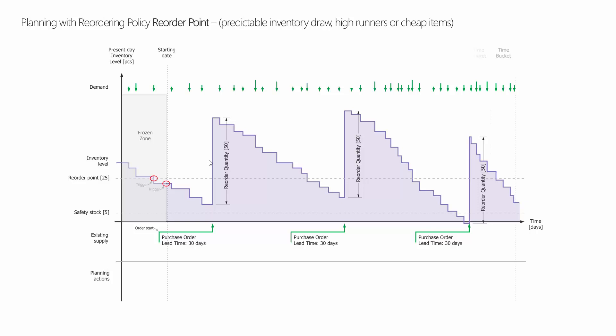First of all, the triggers and the frozen zone won't do a lot. But the planning will plan into time buckets — that's the first field on the item card. It divides all the demands into time buckets and plans on the start of each time bucket. So the first true trigger point is here, because we get below reorder point before that period in that time bucket, and therefore it will capture the reorder point on the start of the next time bucket. This creates fewer planning lines that generate changes.